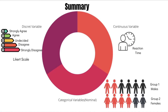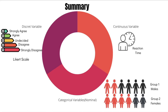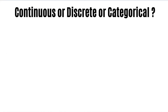In summary, variables can be continuous — taking up any value within a given range — categorical — allocated to specific categories — or discrete — taking only certain values within a given range. Moving forward, let's try to understand how we can distinguish whether variables are continuous, discrete, or categorical.